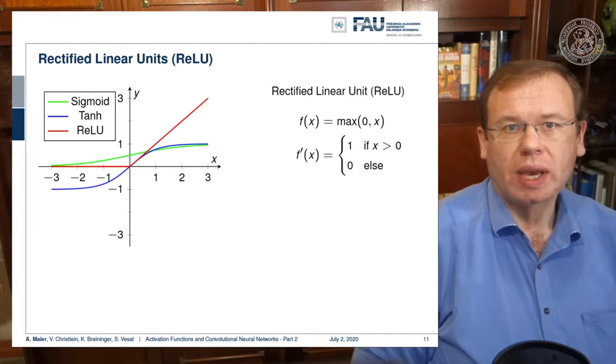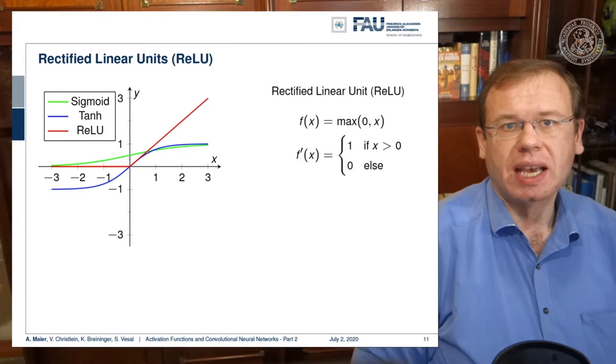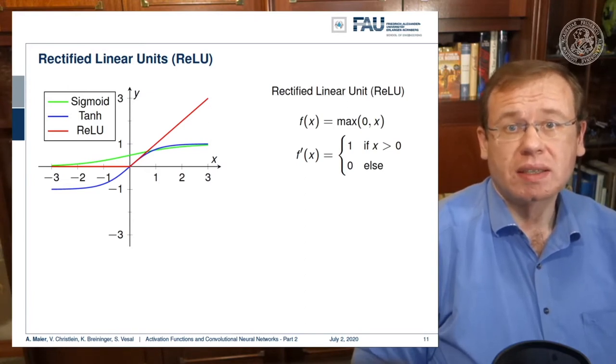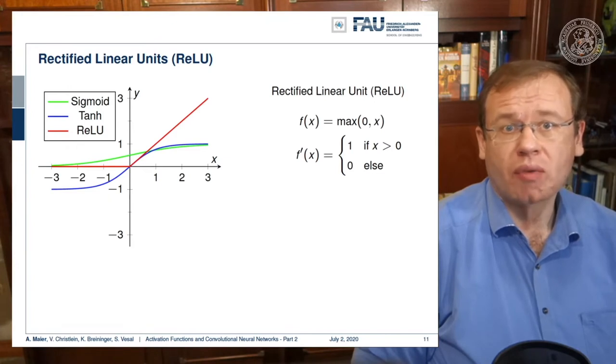Now the ReLU we have already encountered earlier and the idea is to simply set the negative half space to zero and the positive half space to x. This then results in derivatives of one for the entire positive half space and zero everywhere else. So this is very nice because this way we get a good generalization.